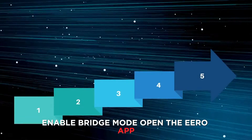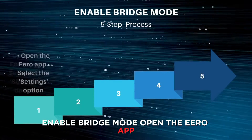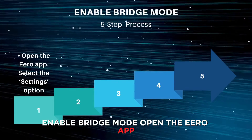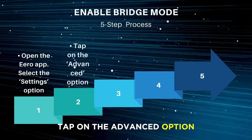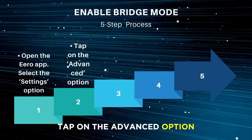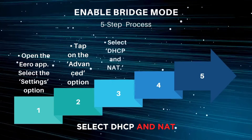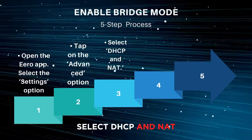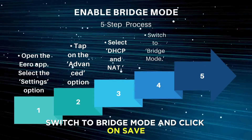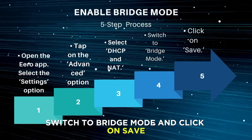Enable bridge mode. Open the Eero app, select the settings option, tap on the advanced option, select DHCP and NAT, switch to bridge mode, and click on save.